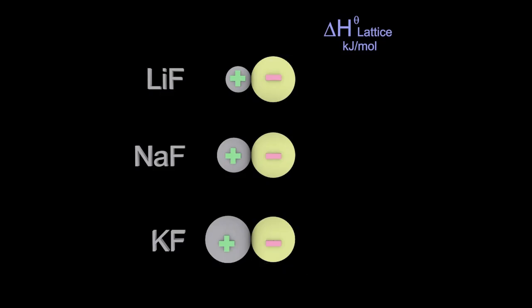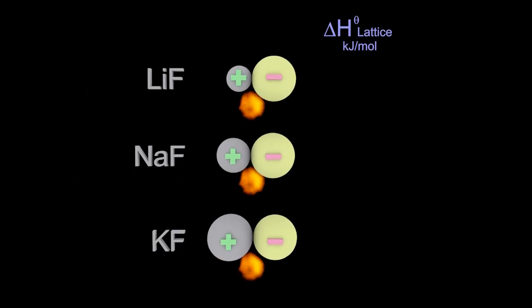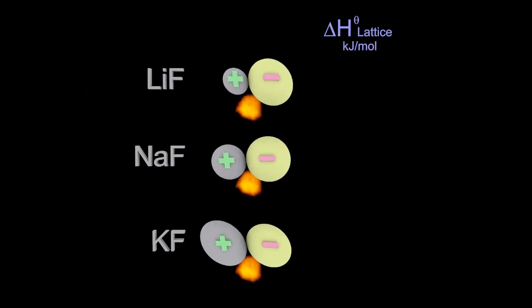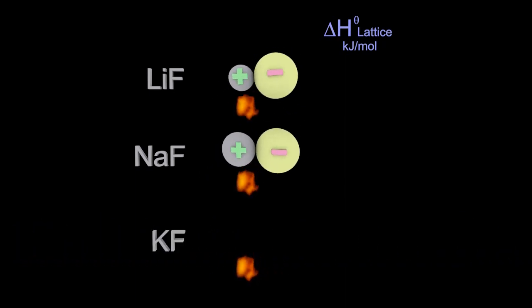So looking at the group 1 metal fluorides, and applying an equal energy source to them, which one's going to break first? Well, you know what? It's the potassium fluoride. That has the lowest lattice energy, and therefore requires the least energy to break the ions apart.